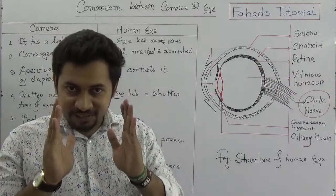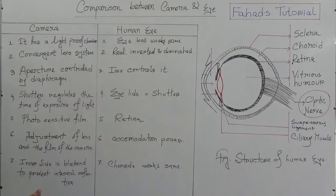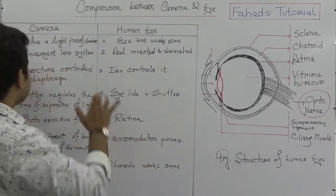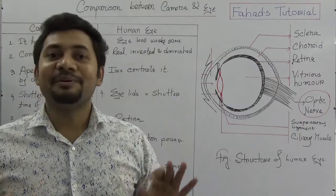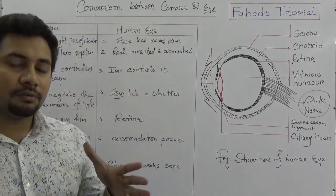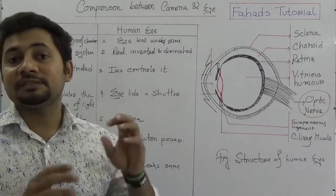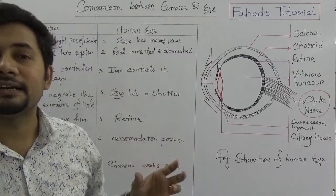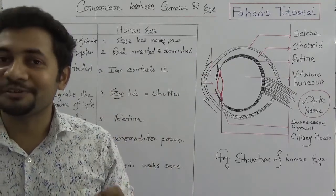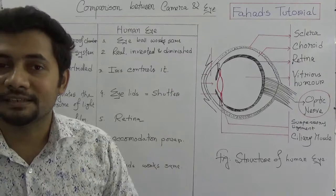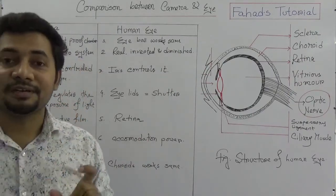When we think about the comparison between camera and human eyes, we need to think topic by topic. The first thing is that a camera has a light-proof chamber. Human eyes also work as a light-proof chamber. Inside the camera it is the camera body, and in our human eyes the light-proof chamber is the eye bulb. So we can say that the eye bulb works as a light-proof chamber.